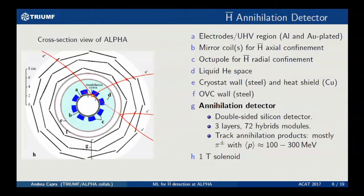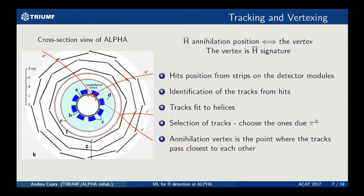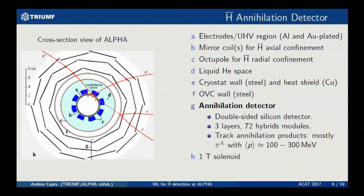I want to point out that we have a detector with a double-sided silicon detector, three layers, 72 modules each, and we track mostly charged pions from the anti-hydrogen annihilation. The annihilation occurs at the trap wall, and these pions travel through a lot of material of high density. So it's a very challenging environment in which to do positional reconstruction.